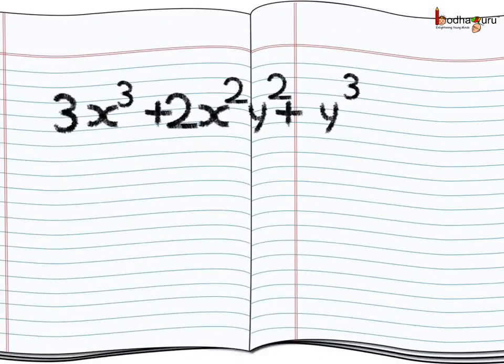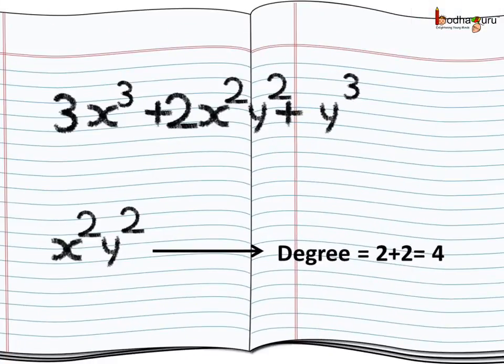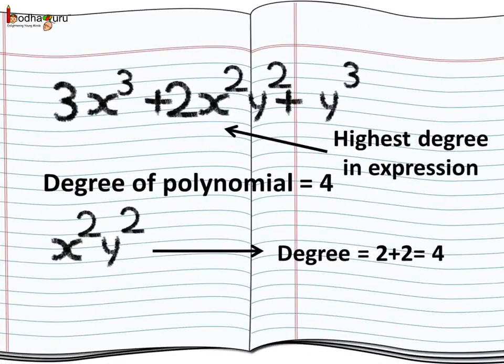Now let's take another example: 3x³ + 2x²y² + y³. What is the degree of this polynomial? You might think the highest power is 3 from x³, so the degree should be 3. But this is wrong. When variables are multiplied, the powers are added to decide the degree of that term. For example, the degree of the term 2x²y² equals 2 + 2, which equals 4. So 2x²y² has the highest degree amongst all terms in this expression, and the degree of this polynomial is 4.